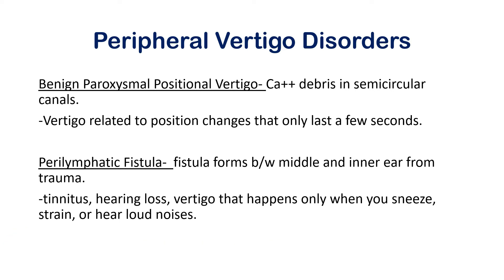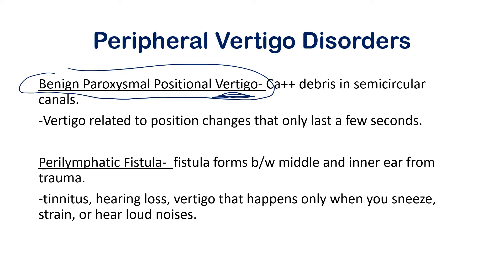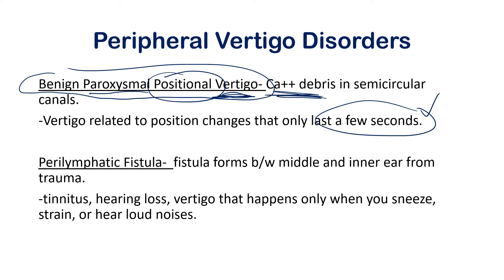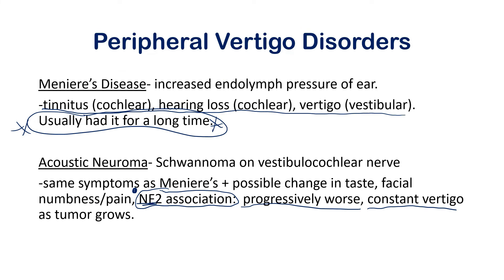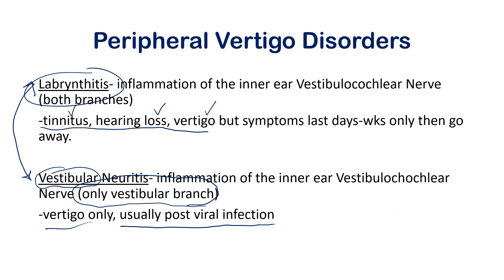Benign paroxysmal positional vertigo (BPPV) is due to calcium debris that builds up in the semicircular canals. The name tells you everything: 'benign paroxysmal' means it comes and goes, and 'positional' means it's triggered by position changes — like laying down to sitting up, or turning the head. The vertigo lasts only a few seconds, because once you stop moving and the calcium debris settles, your body reorients. Compare this to Ménière's, which lasts minutes to hours, and acoustic neuroma, which is constant.